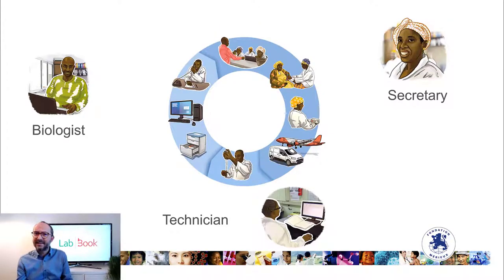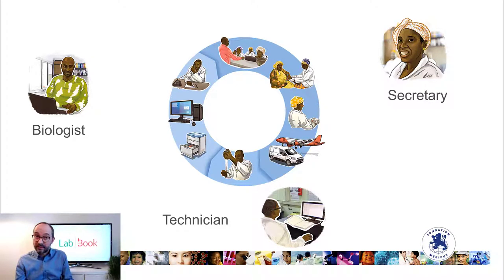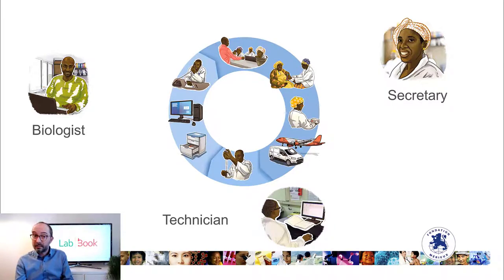How does an LIS work? There is a dedicated lab activity process that goes from the secretary, who enters all the patient information and analysis requests, then moves to the technician account, where all the lab results are entered into the software. Then it moves to the biological account where biological validation is performed and the lab report is edited.